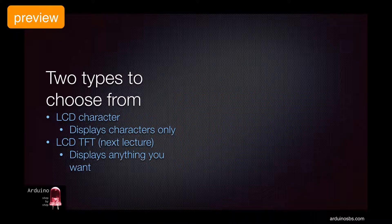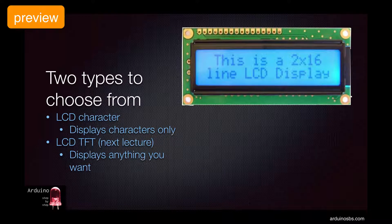In general, we can distinguish LCD screens in two categories: character and TFT screens. Character screens are those that limit their display to show character icons only. You can write and manipulate characters in rows and columns.